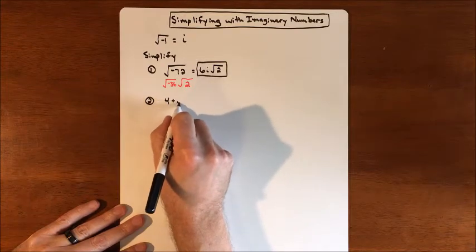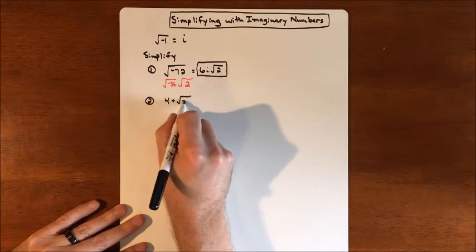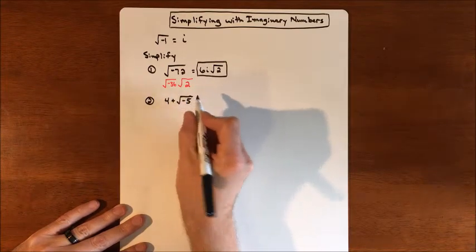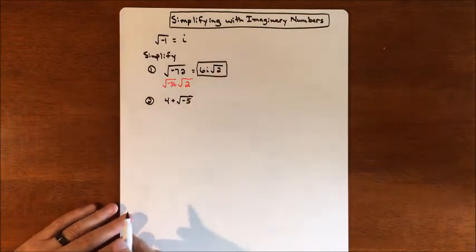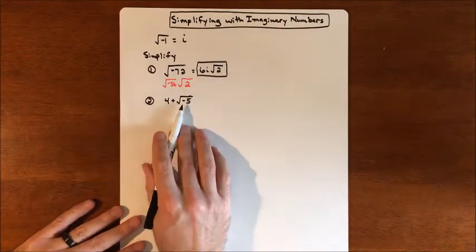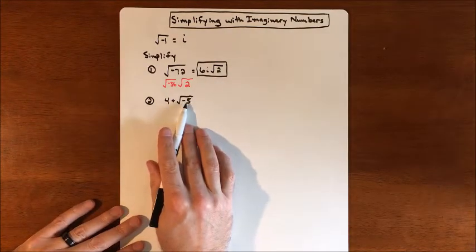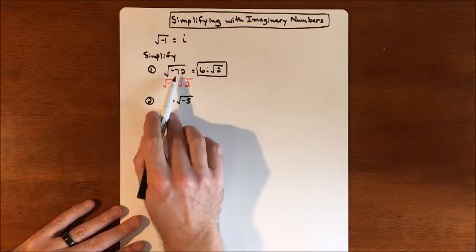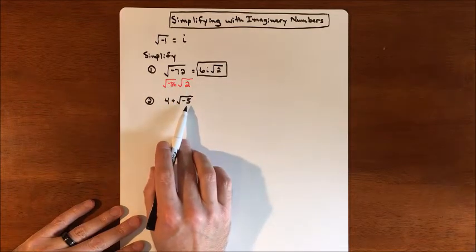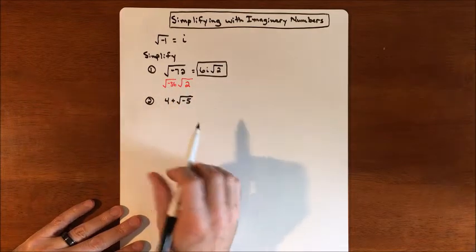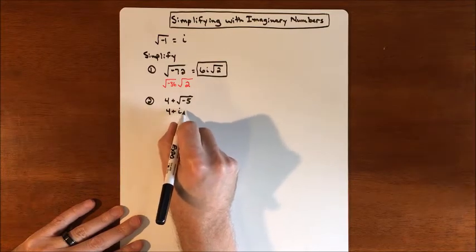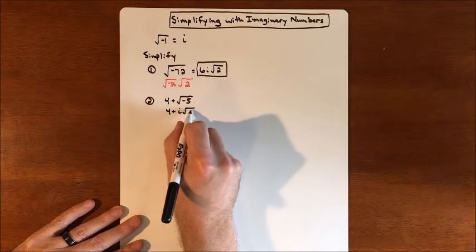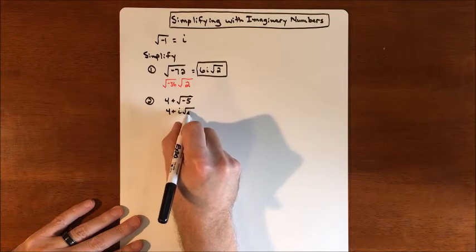Let's simplify 4 plus the square root of negative 5. Sometimes there's a lot we can do, sometimes there's not. That square root of negative 5 — we check for a perfect square inside, but there isn't one. So the only thing we can do is take out the negative from the square root and symbolize it with an i, giving us 4 plus i times the square root of 5.